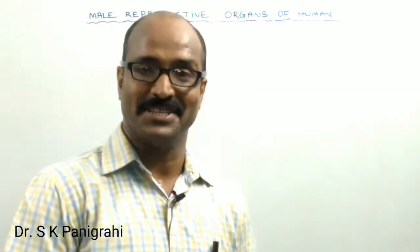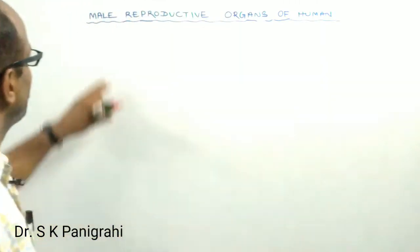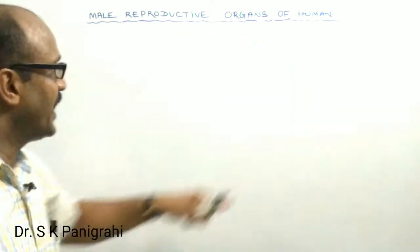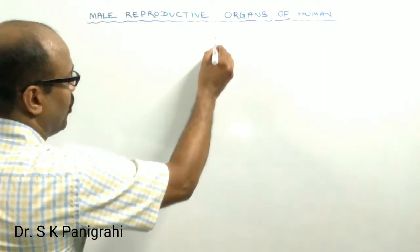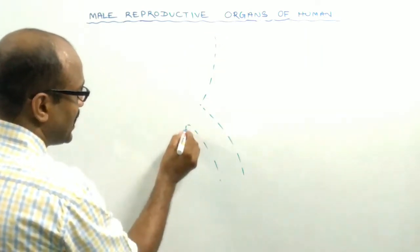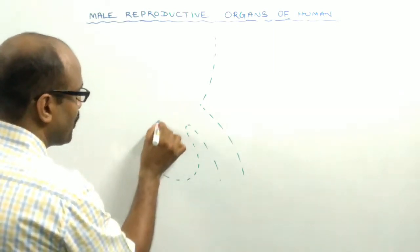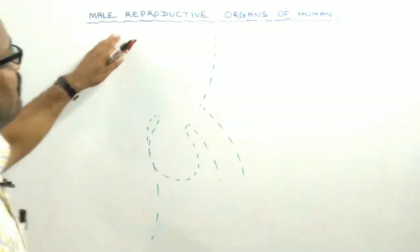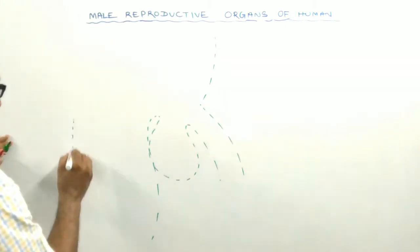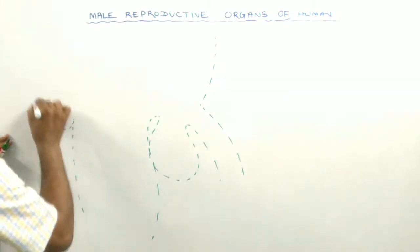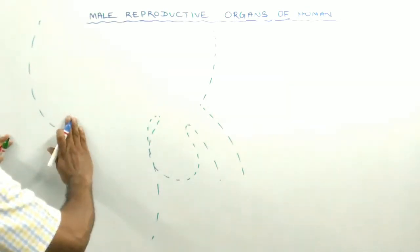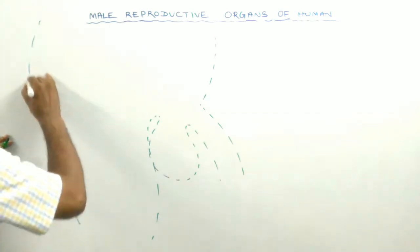Hello, welcome to my another session. In this session, I have a talk about the male reproductive organs of human. As you know that those organs are involved in the process of reproduction, these organs are known as reproductive organs. In case of male reproductive system, those organs involved in the process of male reproduction are known as male reproductive organs.